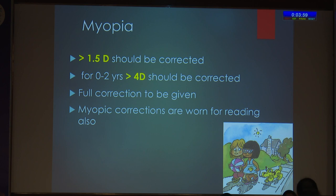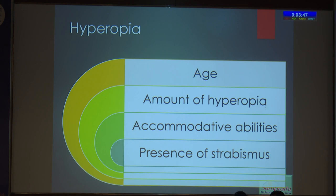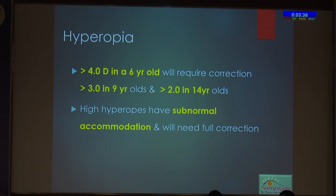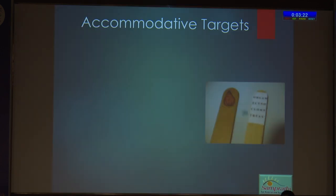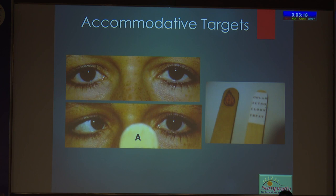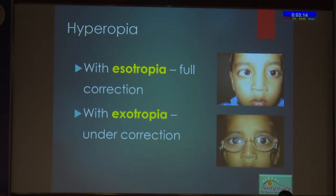Hyperopic corrections decrease esotropia whereas they can increase exotropia, and myopic corrections will decrease exotropia and increase esotropia — this has to be remembered any time you're prescribing glasses to a child. Prescribing guidelines: myopia of more than 1.5 D in an older child should be corrected. For children less than 2 years, more than 4 D should be corrected. Hyperopic correction is a little more tricky because there are a lot of other factors — the age of the child, the amount of hypermetropia, the accommodative abilities, and the presence or absence of strabismus. Whenever hypermetropia is associated with esotropia, we always try to give the full correction, whereas whenever it's associated with exotropia, we undercorrect.